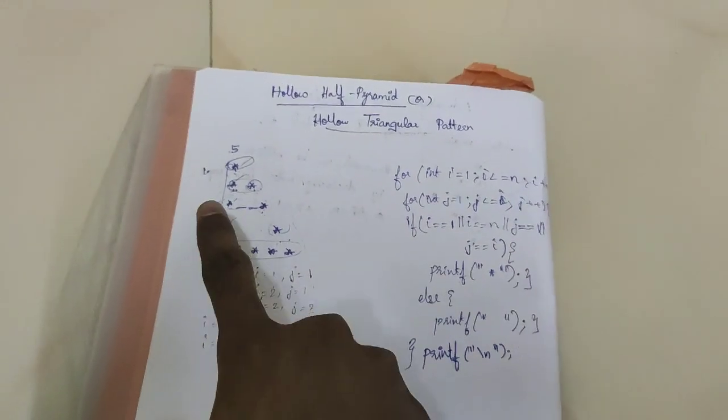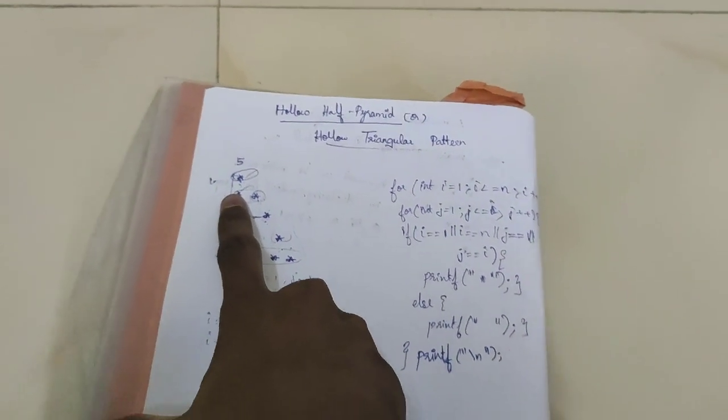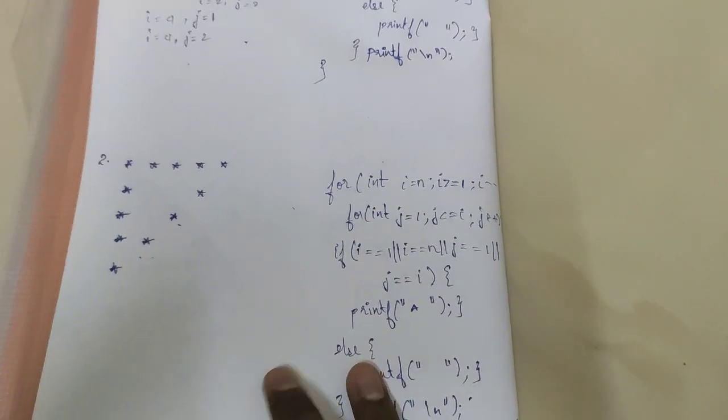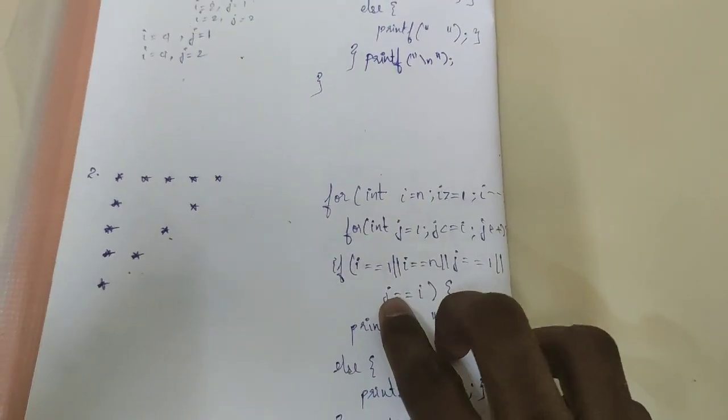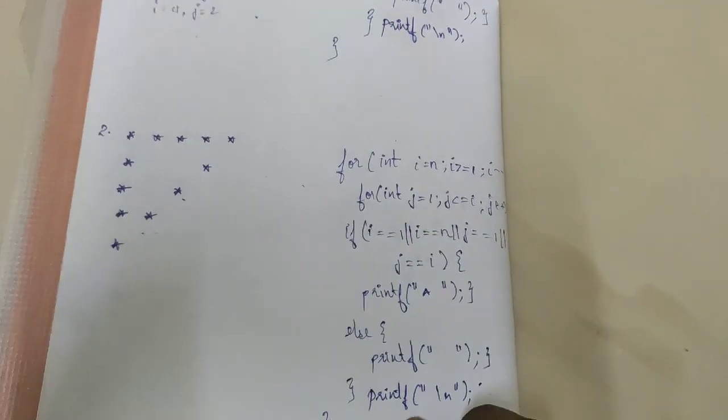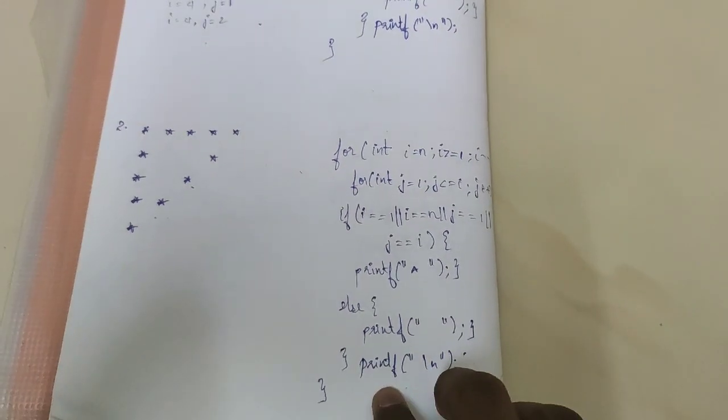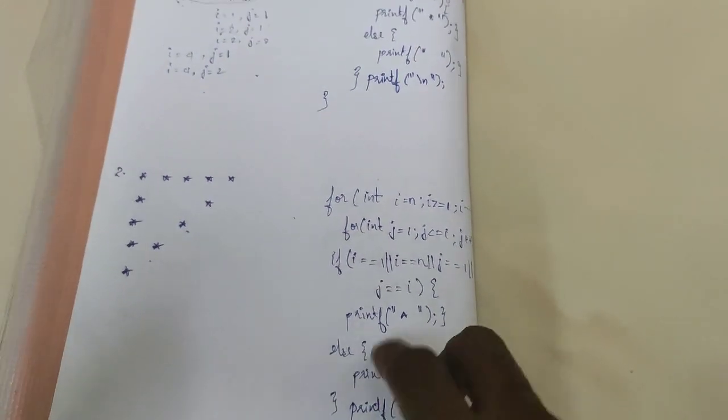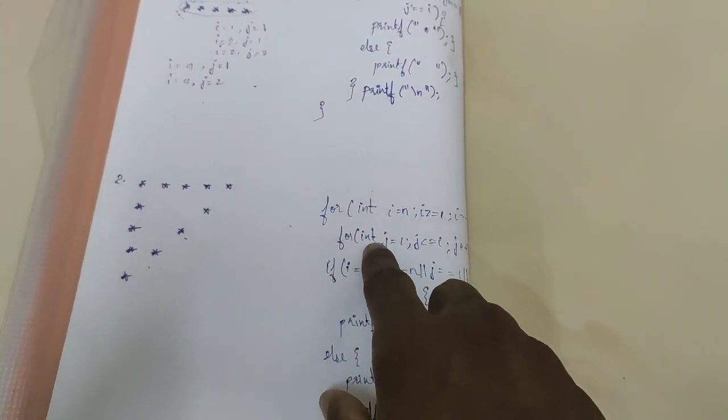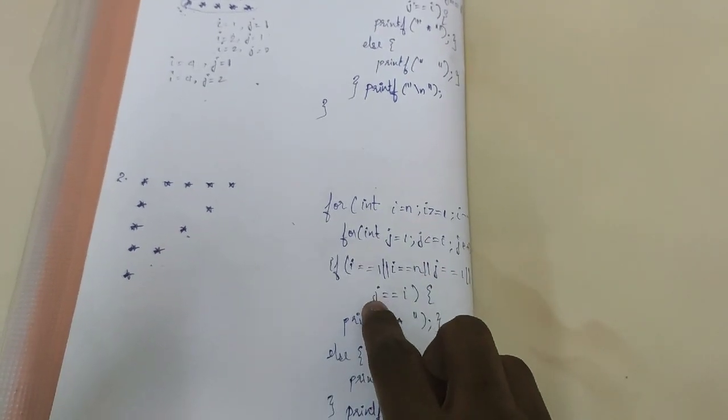And in the second video also, in the second pattern also, I have forgotten to print the new line. So make a note of this: you have to print a new line after executing the inner for loop and your condition.